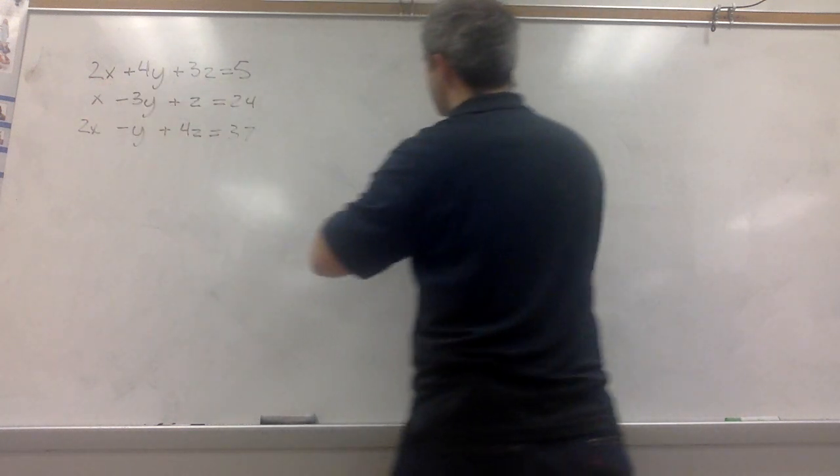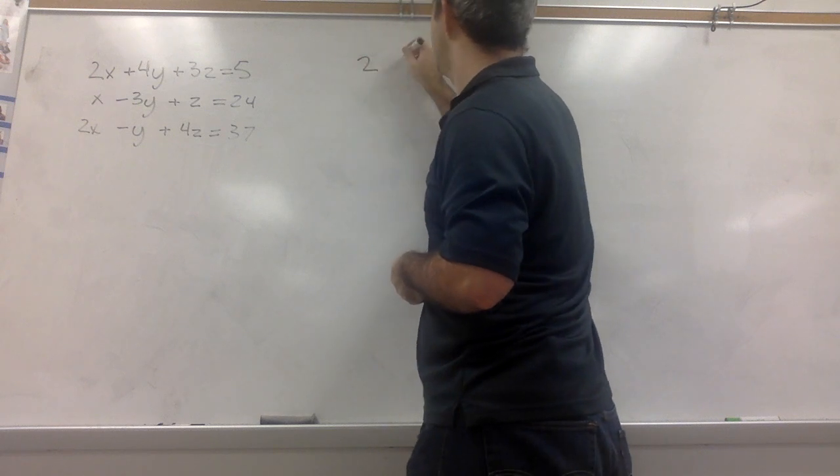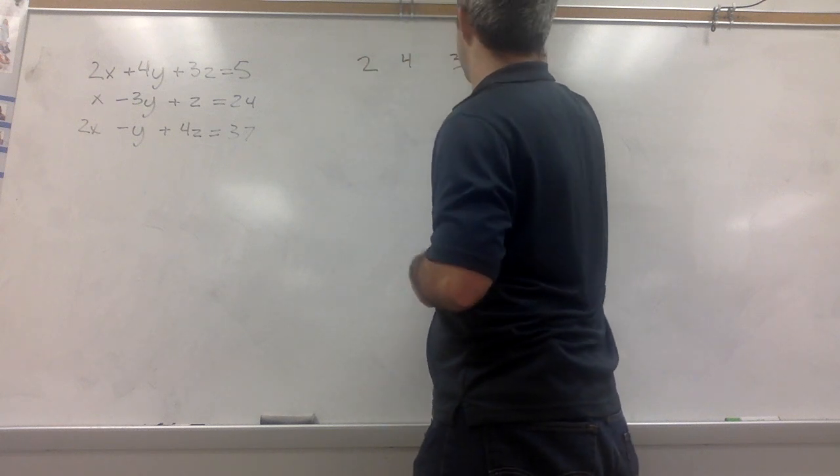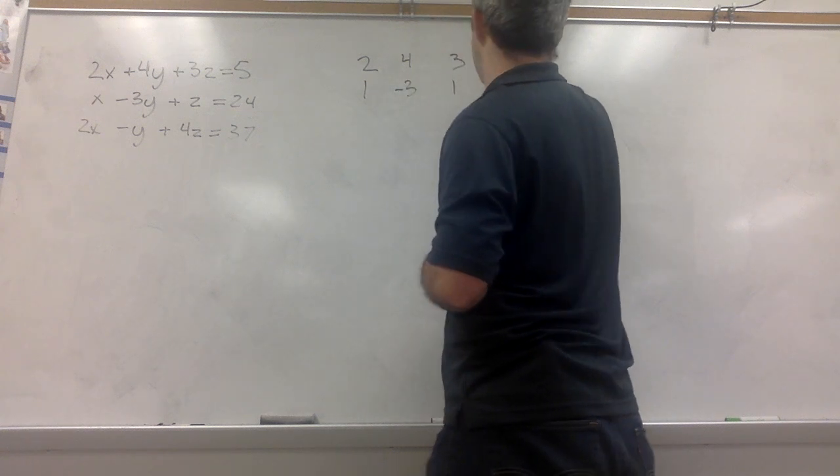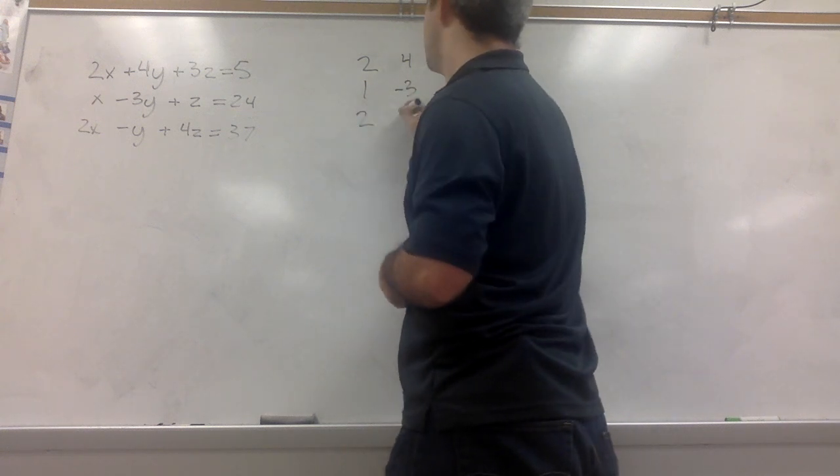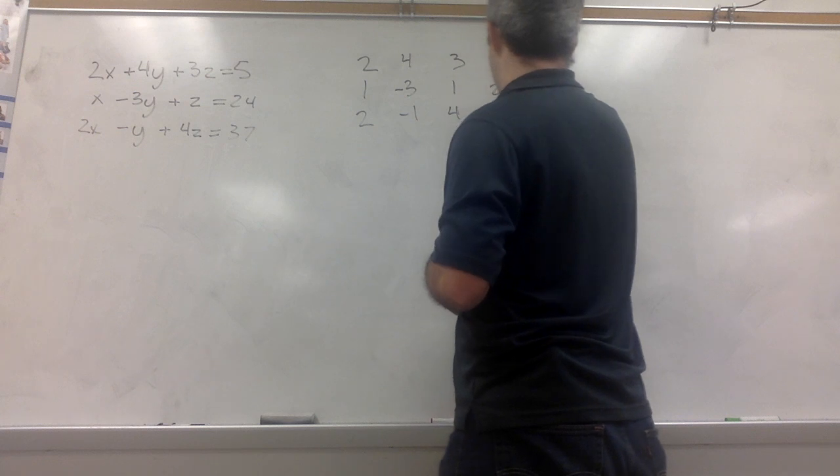We just take the coefficients. So 2, 4, 3, 5, 1, negative 3, 1, 24, 2, negative 1, 4, 37.